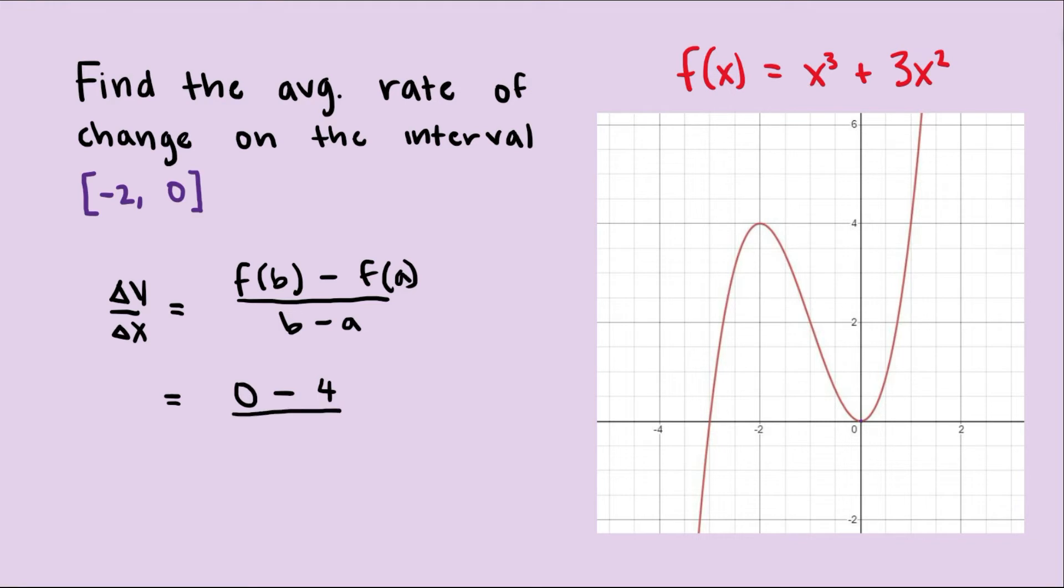Over b minus a, b is 0 and a is negative 2, so we're subtracting a negative number. We get negative 4 over positive 2, and that's negative 2. So negative 2 is our average rate of change on the interval [-2, 0].